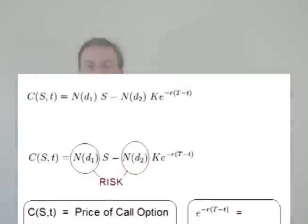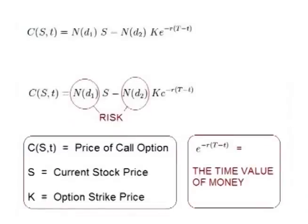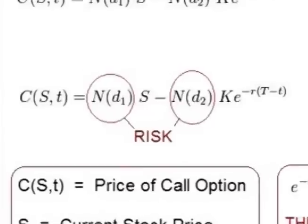Looking at the Black-Scholes formula, we can split it into four parts. The first is the current price of the stock. The next is the strike price of the option — the price that the stock needs to be at or above in the future for the option to contain value. The third is something called the time value of money, which we will cover in a moment. Then there is the fourth part: ND1 and ND2.